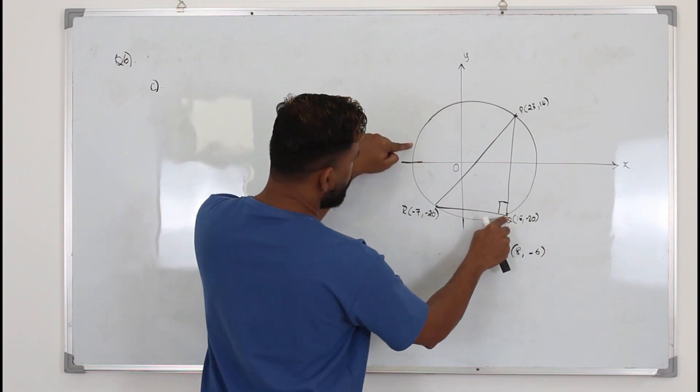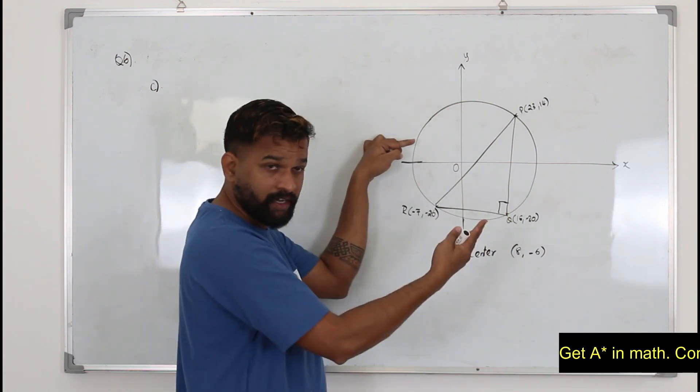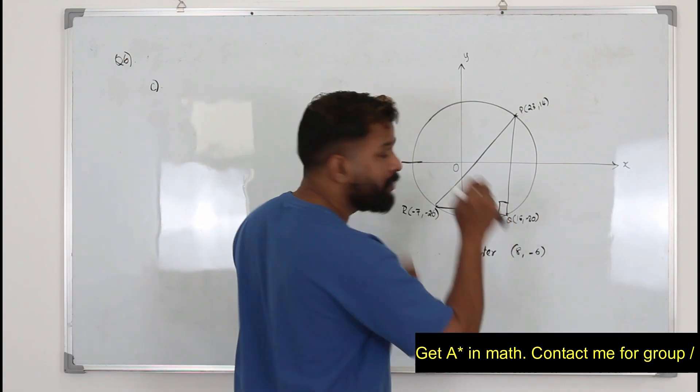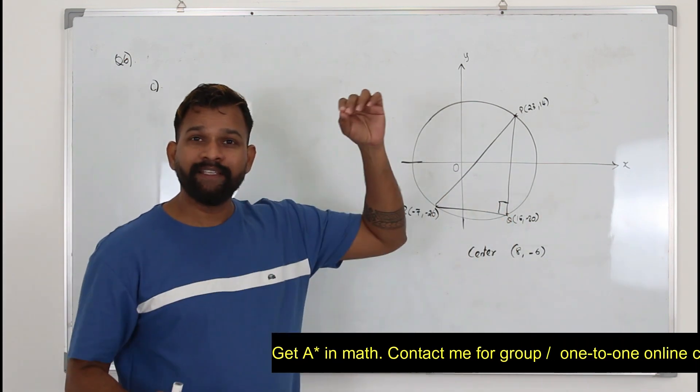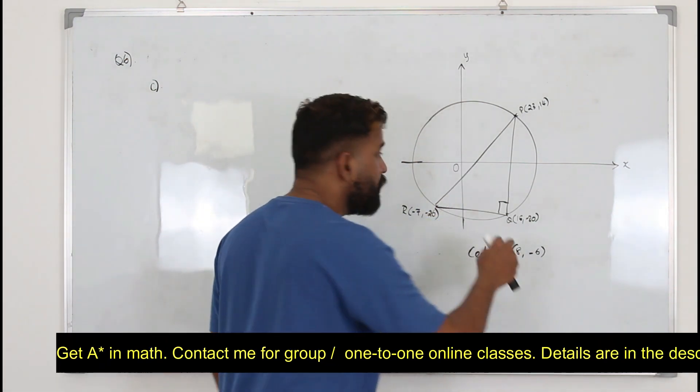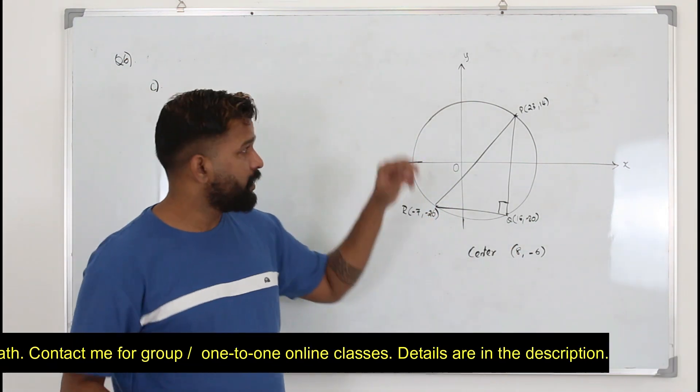If you put S here, you will have a much larger distance, right? So the distance will be greatest if Q and S is a diameter, right? Because the diameter is the biggest chord in a circle.